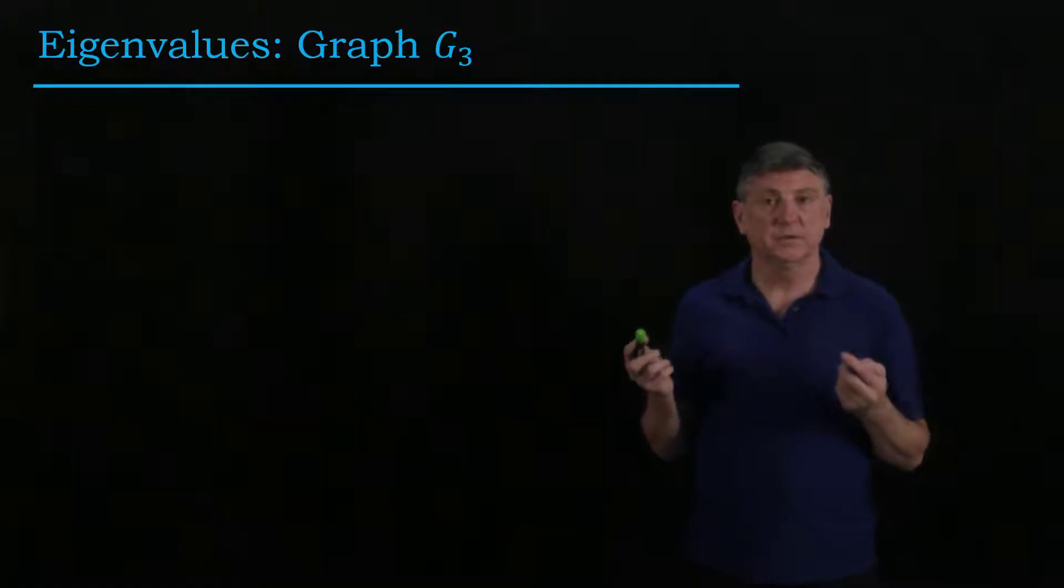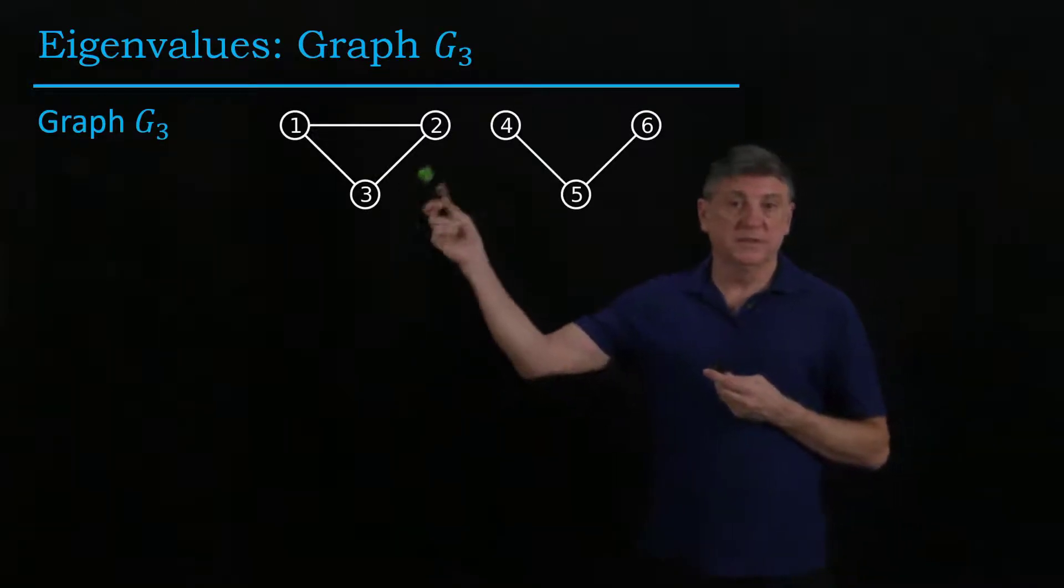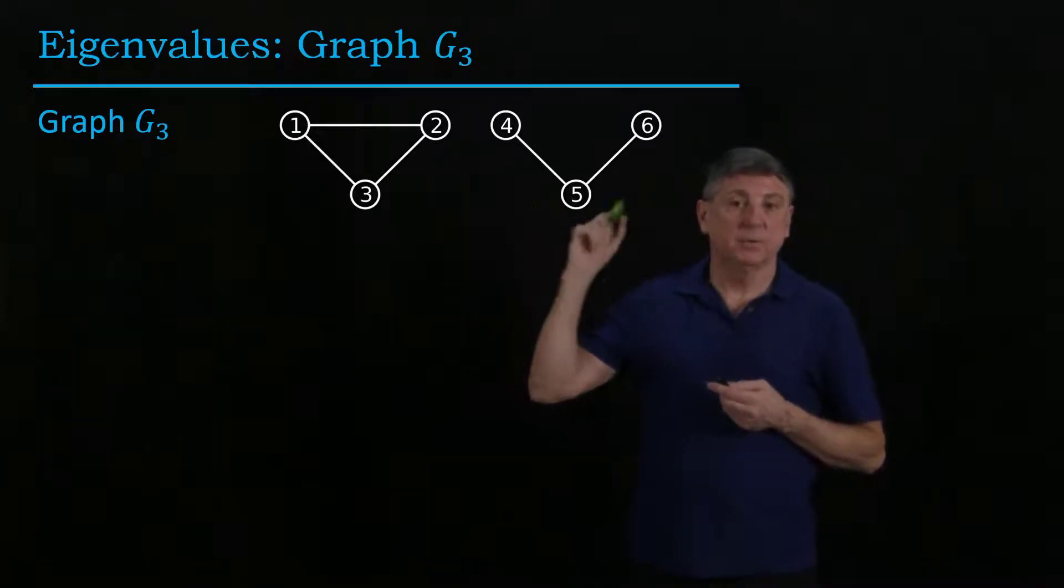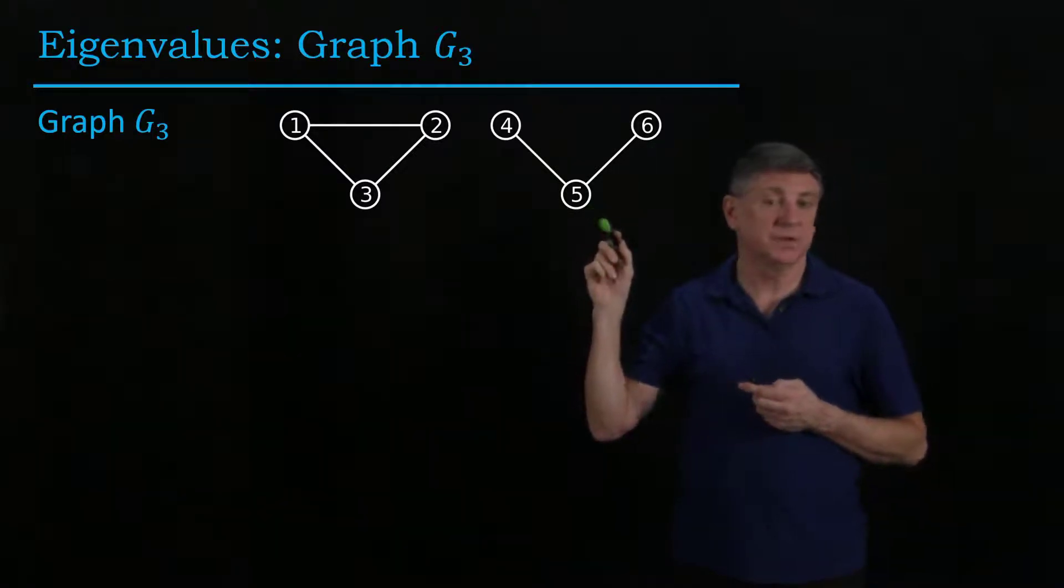Now let's suppose that we look at graph three. So graph three we can recall was this cycle structure and then in the other component we've added a single vertex and we've connected it to just one other vertex.